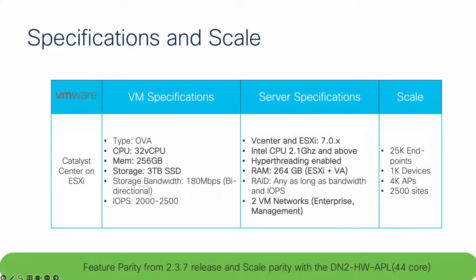Here you can see the Catalyst Center VM specs. You will need to get the OVA file. You will need 32 CPUs minimum, 256 GB of memory, and storage requires three drives — a solid-state drive is strongly recommended because of IOPS and storage bandwidth requirements. For server specifications, ESXi minimum version required is 7.0, minimum CPU 2.1 GHz, and 264 GB of RAM on your server. You will need two interfaces: a 10-gigabit interface for enterprise and a 1-gigabit interface for management.